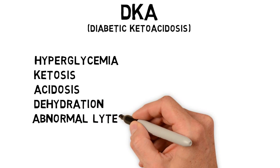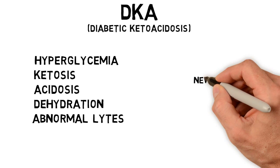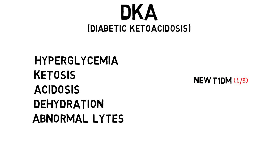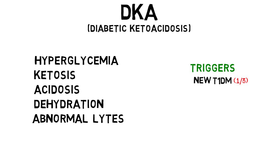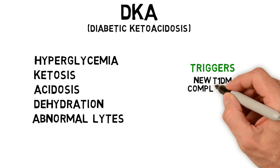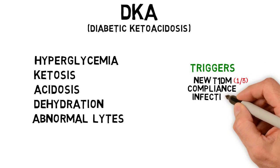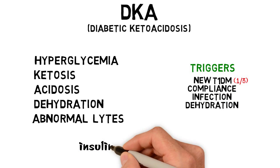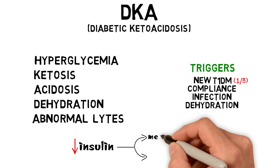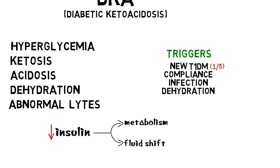It affects patients with diabetes, particularly type 1 diabetes. Up to one third of new onset type 1 diabetes present in DKA. Other common DKA triggers include poor insulin compliance, infection, and dehydration. DKA is ultimately due to insulin deficiency and results in altered metabolism and fluid shifts.